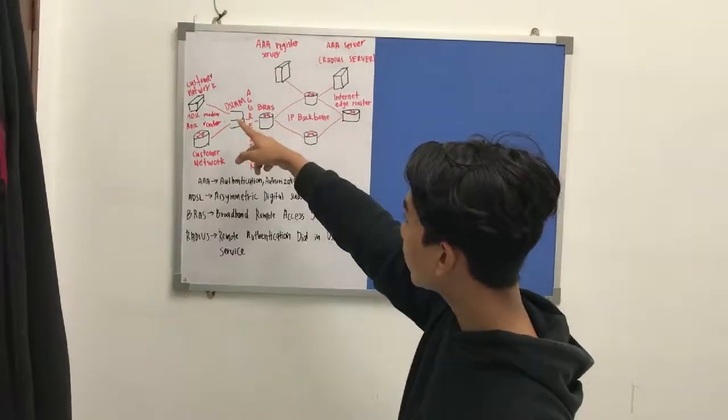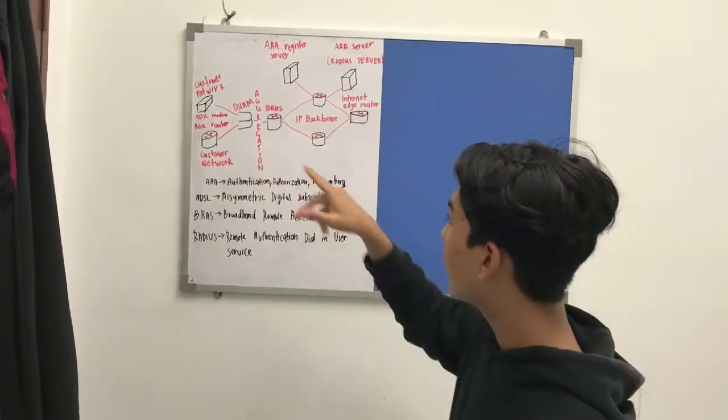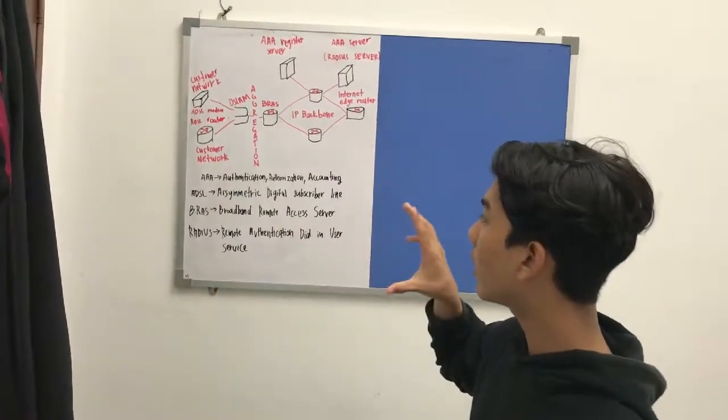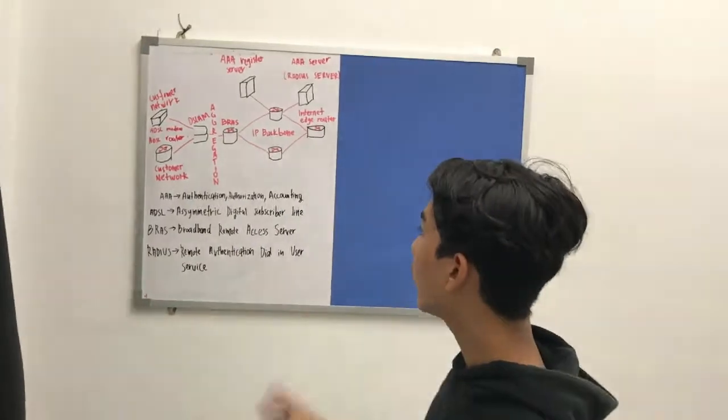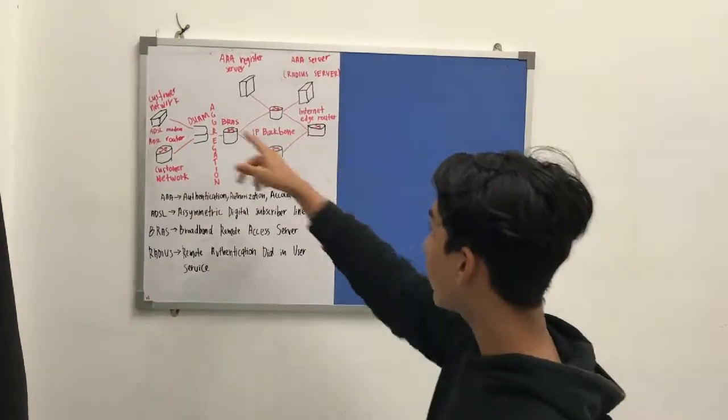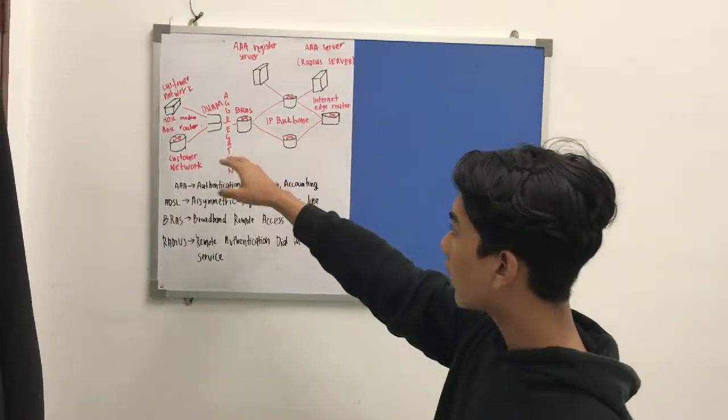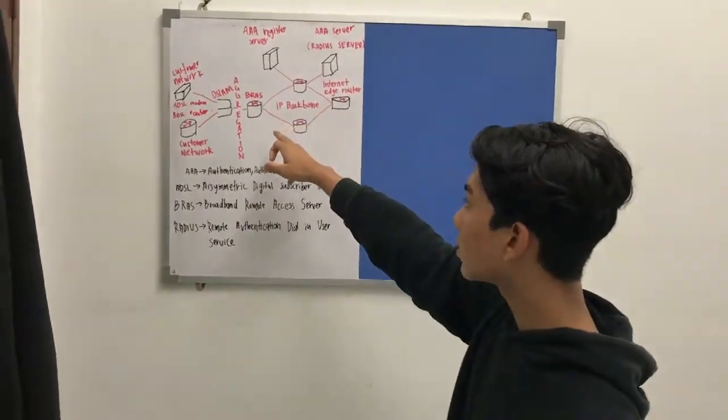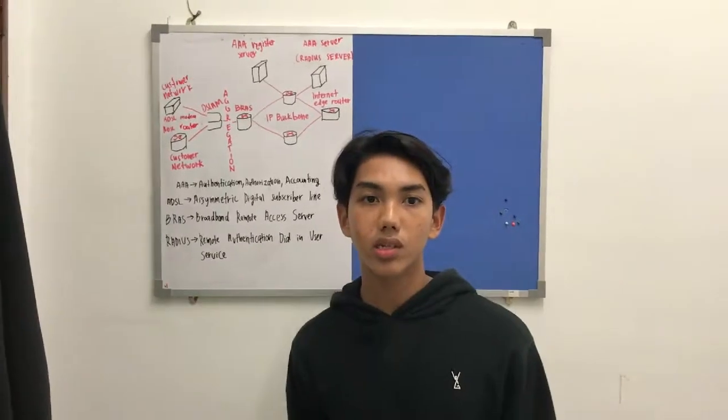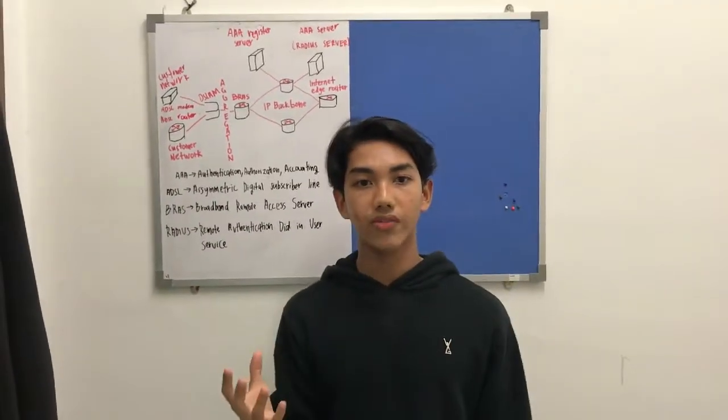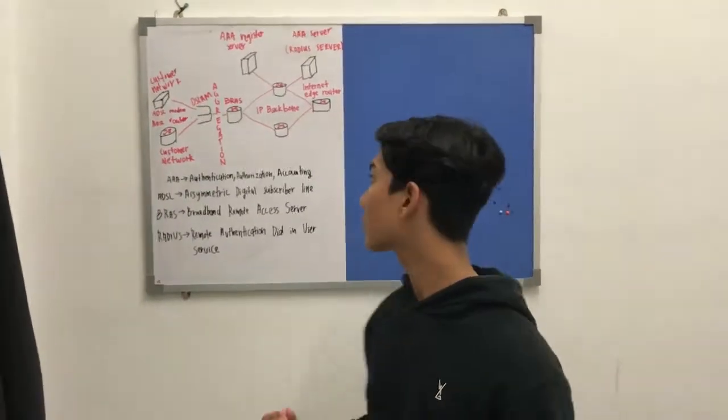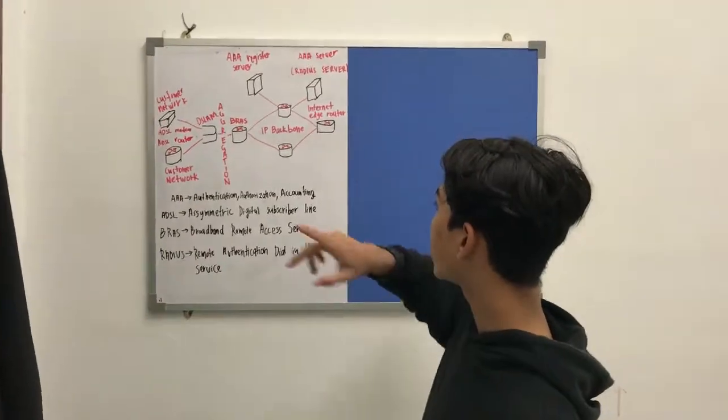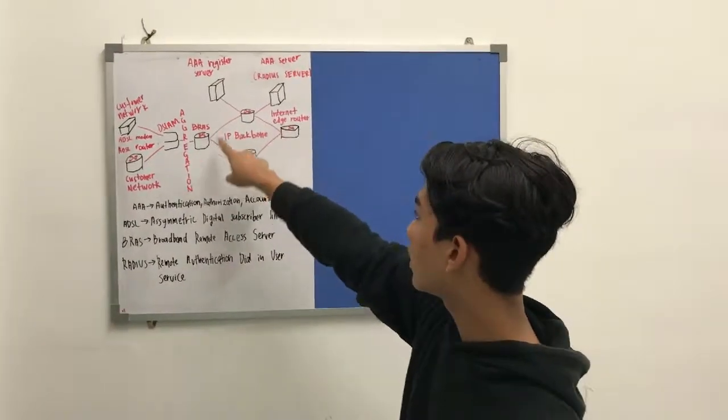First, we got two ADSL modem and ADSL router which is we call as a customer network. Then, we go through to the DSL AM code and then we go to the aggregation and then we go to the BRAS. The BRAS main function which is routing traffic between the DSL AM. Then, we go to the IP backbone. Here is the IP backbone.